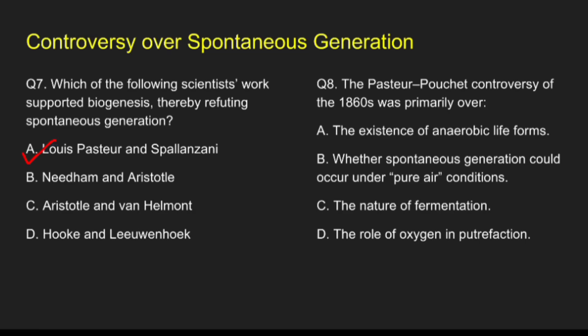Question 8: The Pasteur-Pouchet controversy of 1860 was primarily over — Option A, the existence of anaerobic life forms; Option B, whether spontaneous generation could occur under pure air conditions; Option C, the nature of fermentation; Option D, the role of oxygen in putrefaction. The correct answer is option B. Felix Pouchet claimed life could spontaneously arise even in filtered air, whereas Pasteur's control experiments disproved his claims.